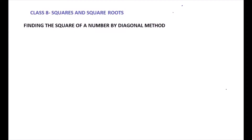Hi, this is Bragaussam. Today we are going to see Class 8 squares and square roots — specifically how to find the square of a number using the diagonal method. Suppose you want to find 8 squared: simply it is 8×8, or 64. But for 2-digit and 3-digit numbers, multiplication takes more time. So now let us consider a 2-digit number and how to find its square using the diagonal method.